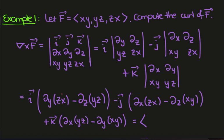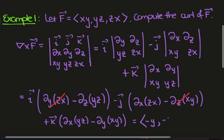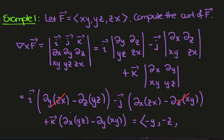The y-derivative of zx is zero and the z-derivative of yz gives minus y. The z-derivative of xy is zero, leaving z, but with the minus sign out front we get minus z. The x-derivative of zx is zero and we get minus x. So the curl of this vector field is (-y, -z, -x). Notice you should get a vector out because the cross product of two vectors in R3 gives you a vector in R3.